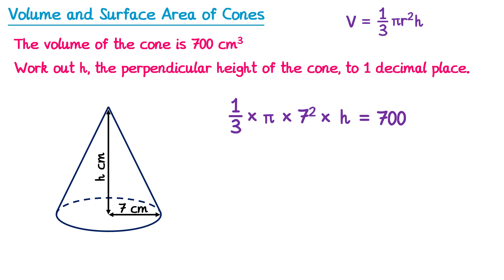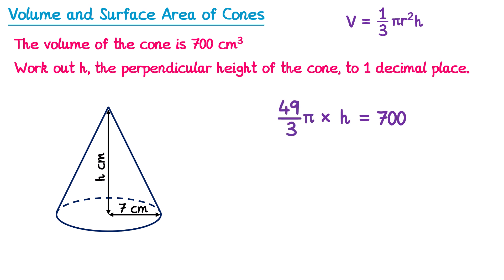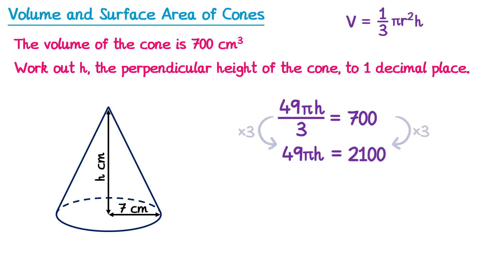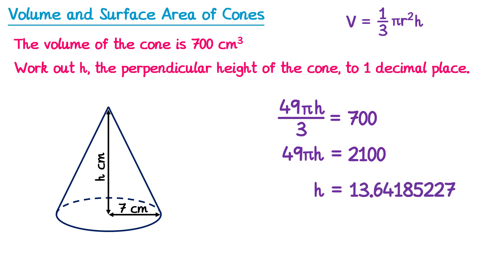Now we solve the equation: (49π/3) × h = 700, or 49π h over 3 = 700. Multiply both sides by 3: 49π h = 2100. Divide both sides by 49π: h = 2100 ÷ (49π). Typing this into the calculator and rounding to one decimal place gives h = 13.6 centimetres.